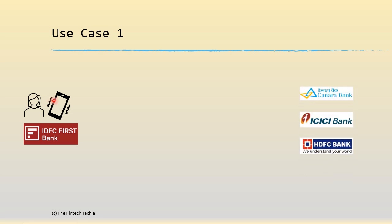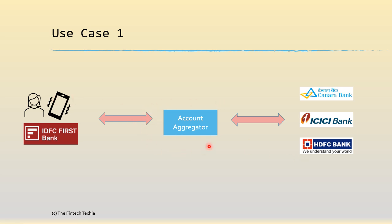Now, you also have accounts in different banks like Andhra, ICICI, and HDFC. So how do you check the balance of these three banks? One way is to log into the individual apps of these banks, or the other way is to use an account aggregator. An account aggregator is an intermediary which helps in pulling all the balances from the different banks and showing you in this app.